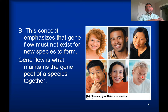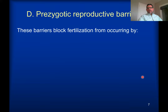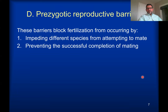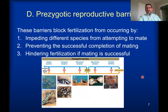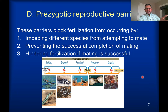With humans, gene flow is what maintains our gene pool and identifies us as members of the same species. But what about other organisms? What kinds of genetic barriers can exist that will prevent gene flow? Let's consider the concept of prezygotic reproductive barriers. In the case of prezygotic barriers, we're looking at mechanisms that will prevent the development of a zygote. The zygote is the cell that results when you join an egg and a sperm. Prezygotic means before the zygote, and these barriers prevent two groups of organisms from reproducing and forming a zygote.